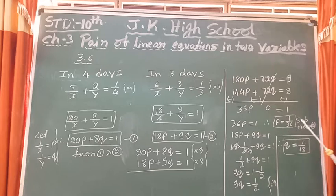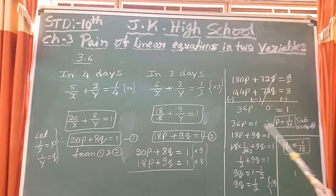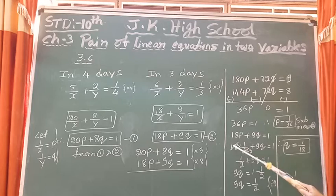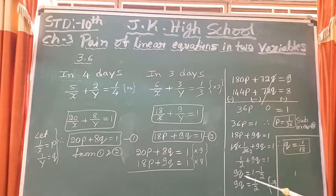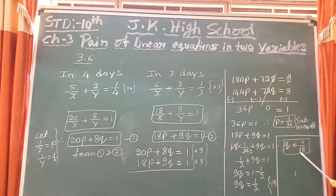Substitute p equals 1/36 into equation 2: 18 times (1/36) plus 9q equals 1. Simplifying, 18/36 is 1/2, so 9q equals 1 minus 1/2 equals 1/2. Dividing both sides by 9, q equals 1 by 18. So we have p equals 1/36 and q equals 1/18.